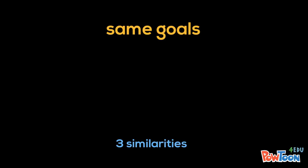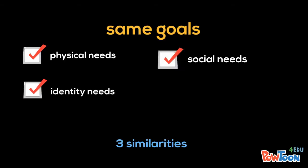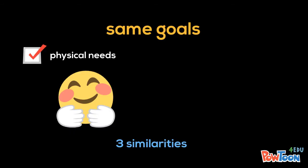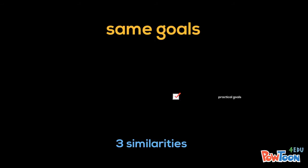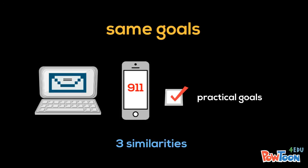Recall that we communicate for four reasons: to fulfill physical needs, identity needs, social needs, and practical goals. We fulfill physical needs by using emojis. Keeping blogs or online diaries is a way of fulfilling identity needs. Our social needs are met when we use Facebook or when we text our friends. Finally, practical goals are met when we email our instructor to find out about an assignment or when there's an emergency and we call 911.